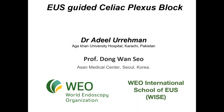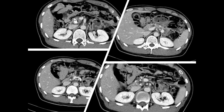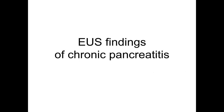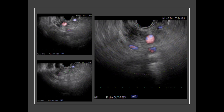EUS-guided celiac plexus block performed in a patient with chronic pancreatitis. CT features show pancreatic tail atrophy, PD stones, and a dilated pancreatic duct, consistent with chronic pancreatitis. EUS findings also show atrophic pancreas and dilated pancreatic duct, confirming chronic pancreatitis.